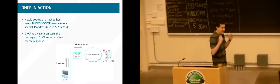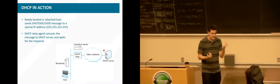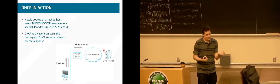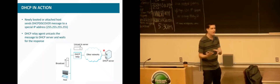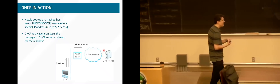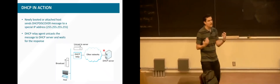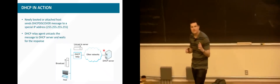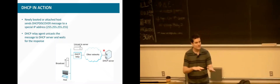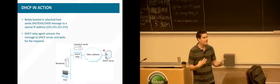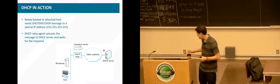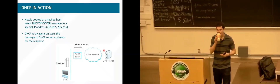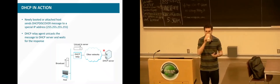We now have a handle — a number that can refer uniquely to every host on the network — and a way to scalably assign addresses to hosts. But how do we actually use these in real life? It's very inconvenient to remember IP addresses, so we want to use something friendlier and easier to remember.